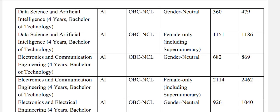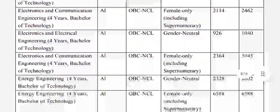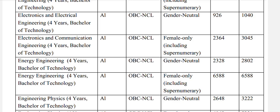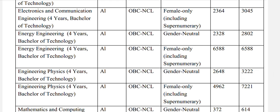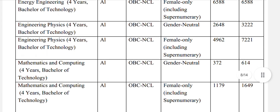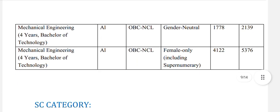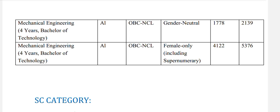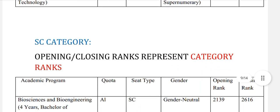Data Science and Artificial Intelligence, OBC-NCL gender-neutral: 479. Electronics and Communication Engineering, OBC gender-neutral: 869. Electronics and Electrical Engineering, OBC gender-neutral: 1040, and for females: 3045. Energy Engineering, OBC-NCL gender-neutral: 2802, and for females: 6588. Engineering Physics, OBC-NCL gender-neutral: 3222. Mathematics and Computing, OBC gender-neutral: 614, and for females: 1649. Mechanical Engineering, OBC gender-neutral: 2139, and OBC-NCL female: 5376.